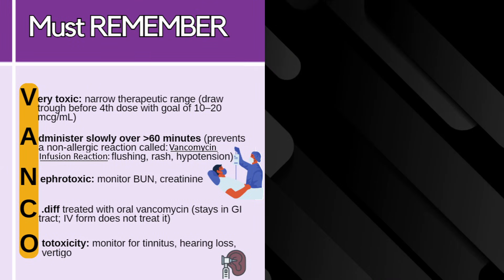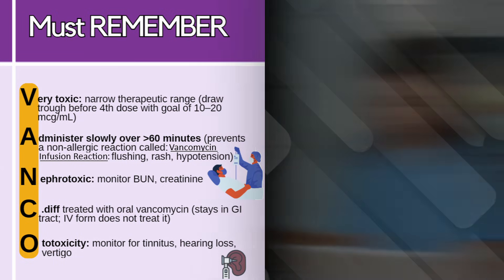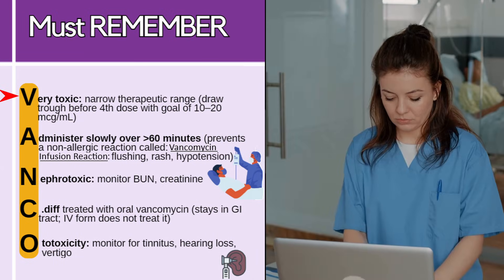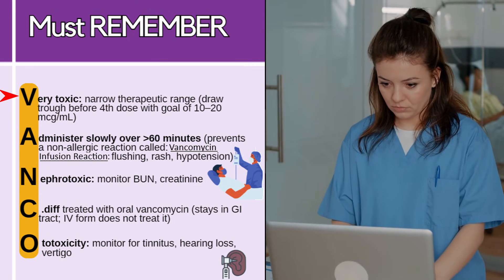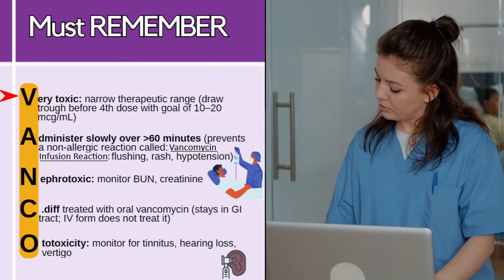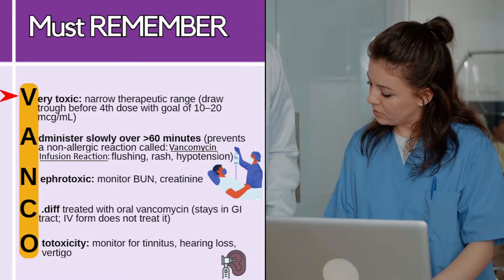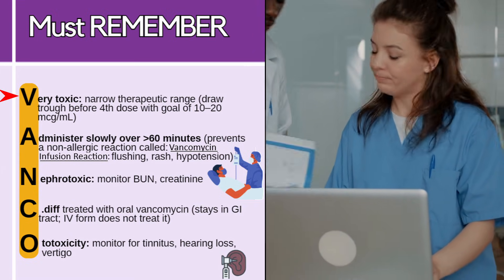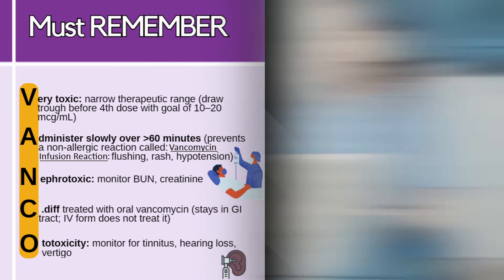To help you remember the important concepts about this class, particularly vancomycin, I want you to remember the word VANCO. Vancomycin is very toxic — it has a narrow therapeutic range, so we are going to draw trough levels to see where our patient's at. You want to draw the trough before the fourth dose, with a goal of it being about 10 to 20 micrograms per milliliter.